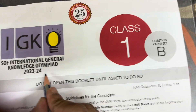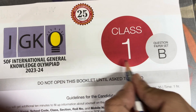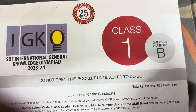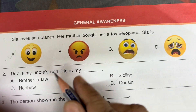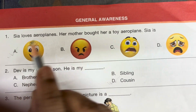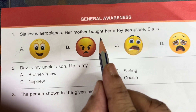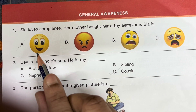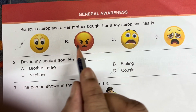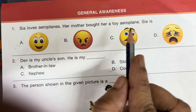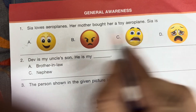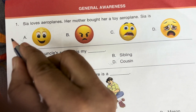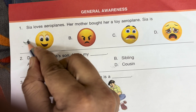IGKO 2023-24 Class 1 Set B. Question 1: Shia loves aeroplanes. Her mother brought her a toy aeroplane. How does Shia feel — happy, angry, scared, or sad? Answer is happy.